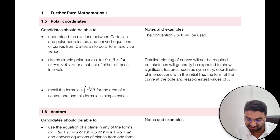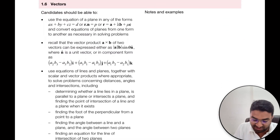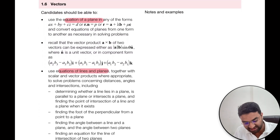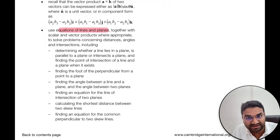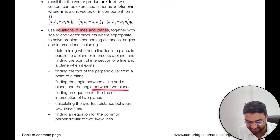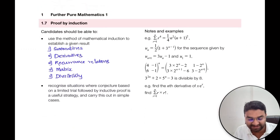Then polar coordinates — we need to understand how to convert polar to Cartesian and Cartesian to polar form, sketch graphs, and find polar curves. Next, vectors: the equation of a plane, vector product A cross B, equation of a line, and equation of a plane. We also determine whether a line lies in the plane, whether it is parallel to or intersects the plane, and find the point of intersection. Further, we find the foot of the perpendicular from a point to the plane, the angle between a line and a plane, the angle between two planes, the equation of a line of intersection, the shortest distance between two skew lines, and the equation of the common perpendicular to two skew lines.